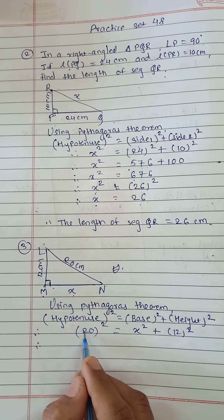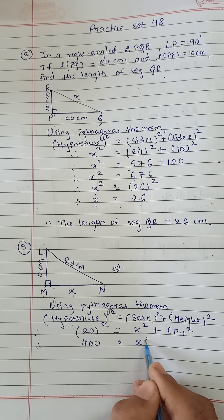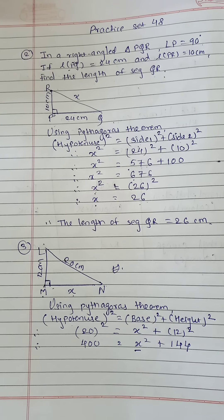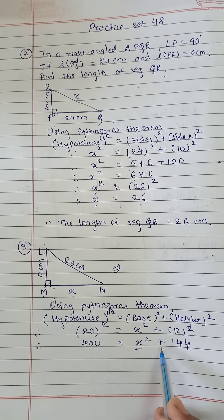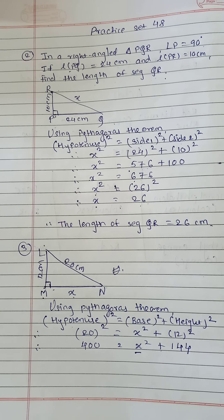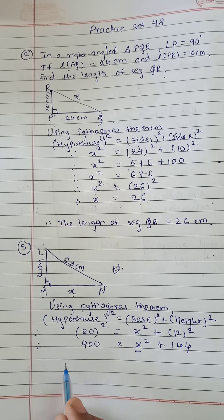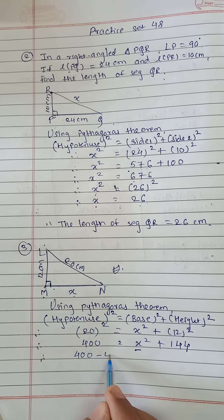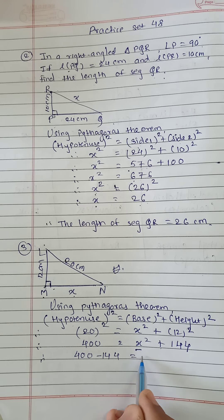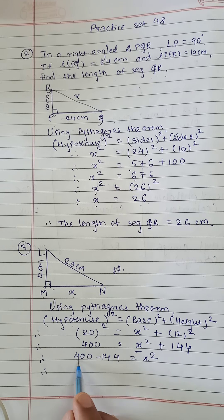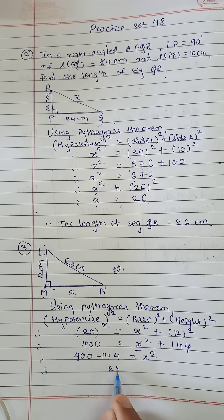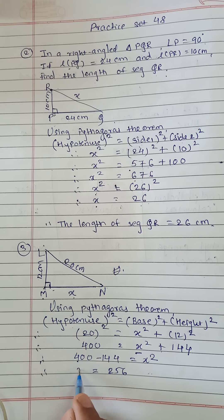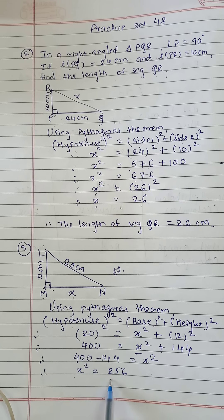The square of 20 is 400. So 400 equals X square plus 144. To find the value of X, we bring 144 to the other side: X square equals 400 minus 144, which is 256.